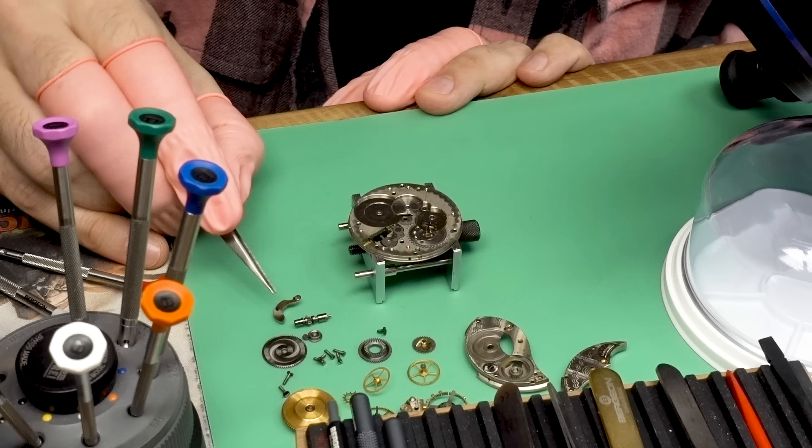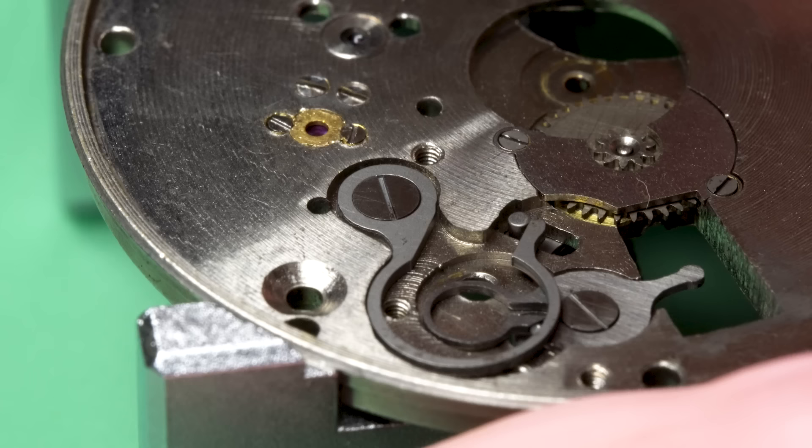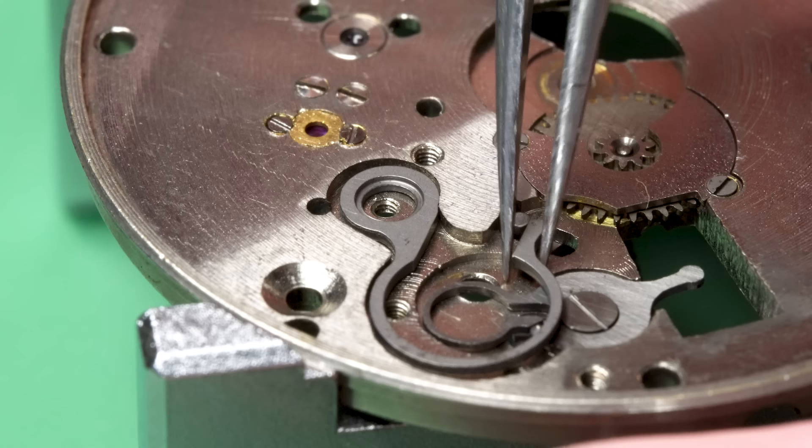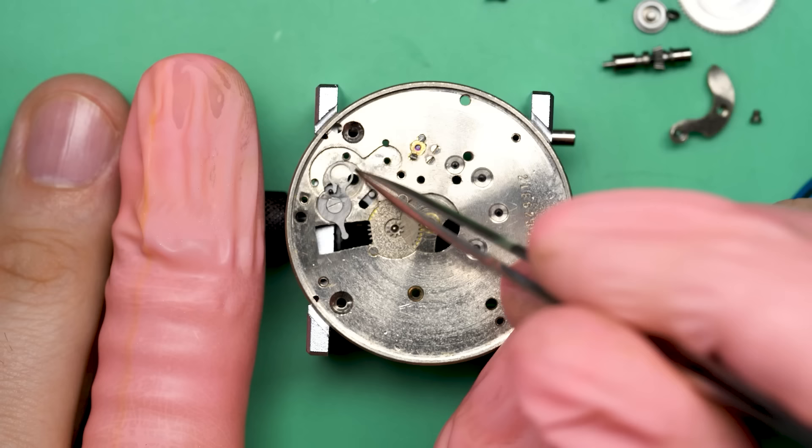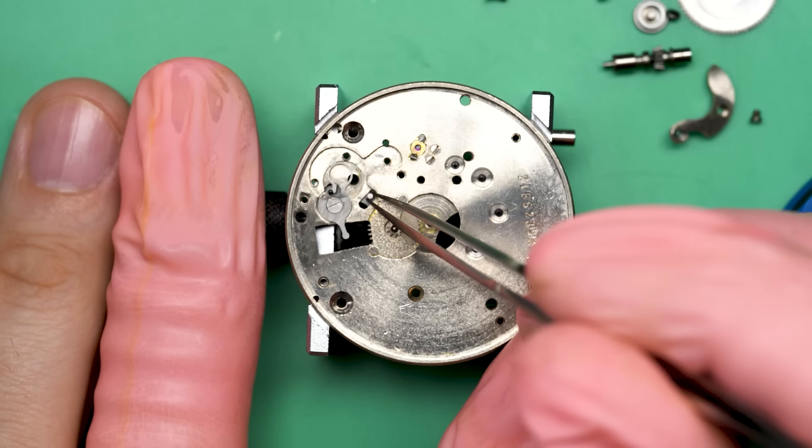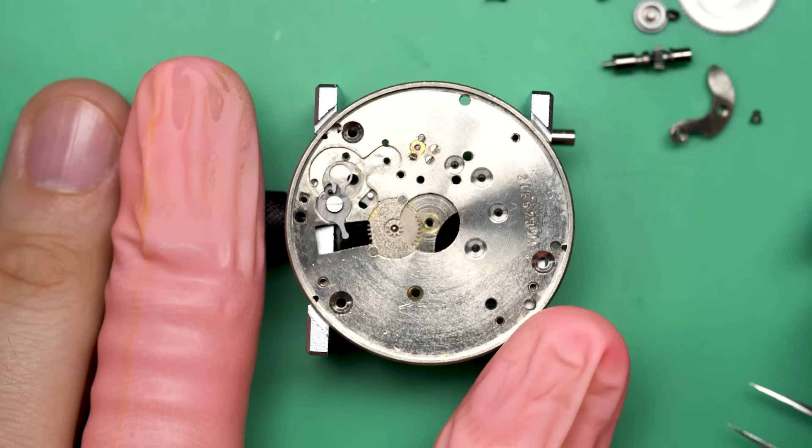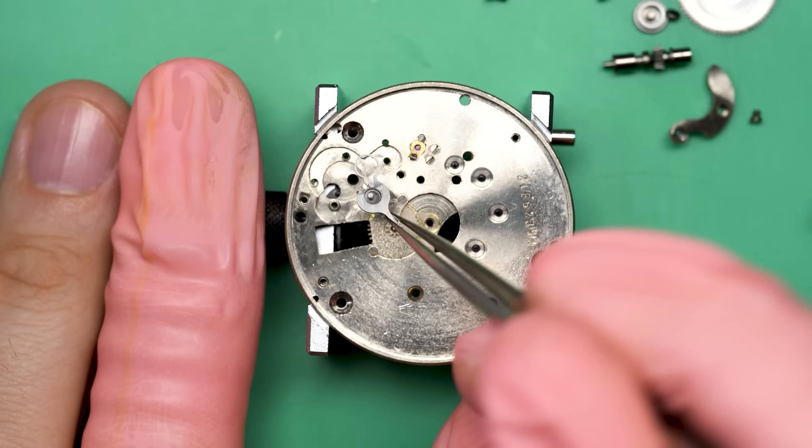As you can see, these watches are very straightforward. We're actually almost done disassembling it at this point. This is the pallet fork bridge and the pallet fork coming out. Flipping the watch back over, we can take out the rest of the Keyless Works, which have two beautiful springs here. You see that three-quarter circle spring? Really cool. They don't make them like that anymore. And this part is actually the yoke with a yoke spring built into it. I'm kind of figuring out how it works because this isn't how wristwatches are set up exactly. Sometimes I have to play around with the parts a little bit.